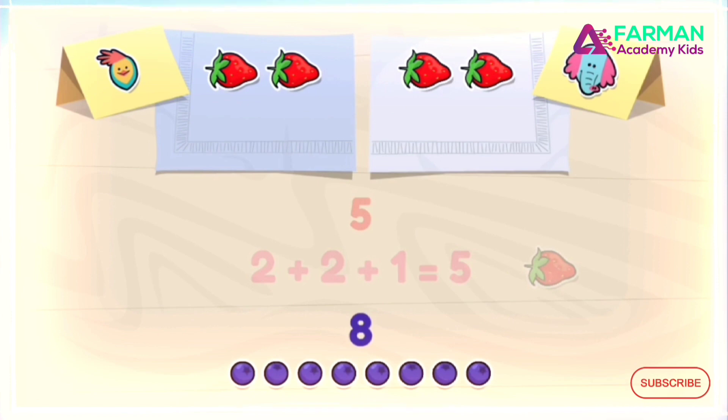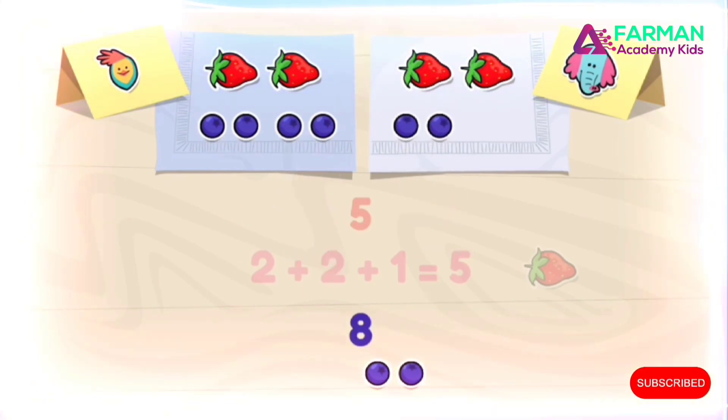Now let's check the eight blueberries by skip counting by twos. Okay, start from two. If we count the number eight, that means it is even. Two, four, six, eight!